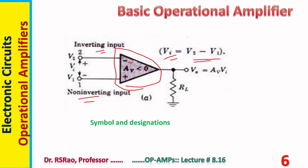The output voltage is equal to A·V_i. Notice that A_B is less than zero, meaning it is a negative, non-zero, finite, and high quantity. R_L is the load. This gives some information regarding the symbol and designations of the op-amp.